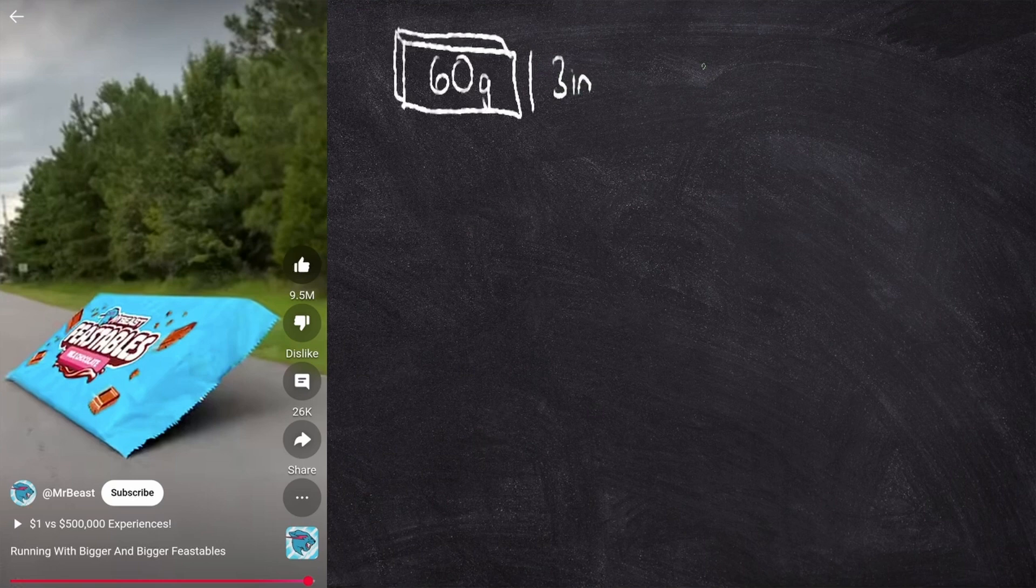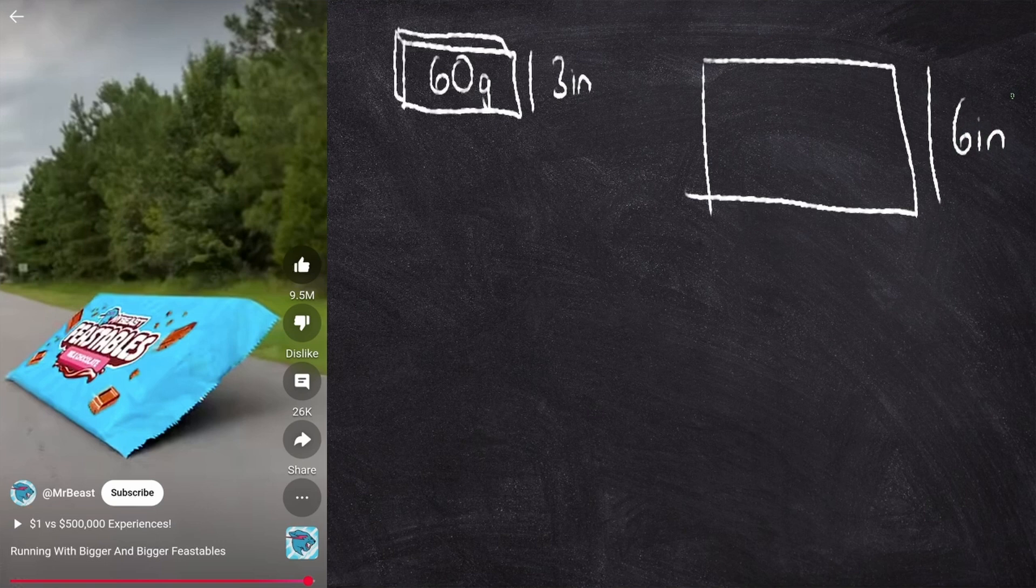So if you carry the same chocolate bar, but this time the width is six inches, then you're doubling the width, but you're also doubling the length and you're doubling the depth of the chocolate bar.